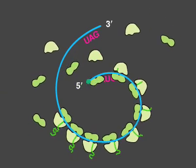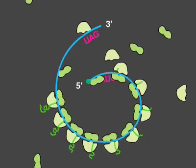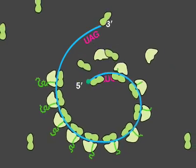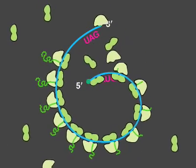These multiple initiations allow the cell to make much more protein from a single message than if one ribosome had to complete the task before another could begin.